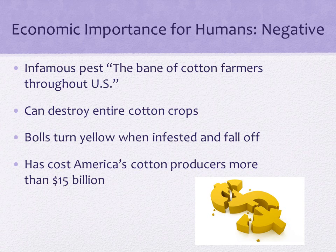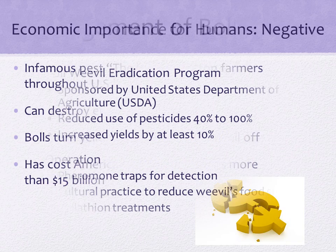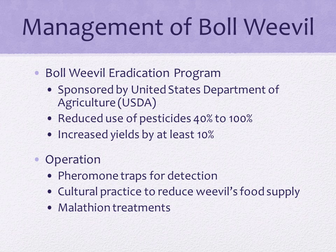In 1958, the National Cotton Council officially recognized the economic havoc the boll weevil was wrecking on U.S. cotton production, and in the late 1970s, the National Boll Weevil Eradication Program was launched. The Boll Weevil Eradication Program is a program sponsored by the United States Department of Agriculture that has sought to eradicate the boll weevil in the cotton-growing areas of the United States. It's one of the world's most successful implementations of integrated pest management.